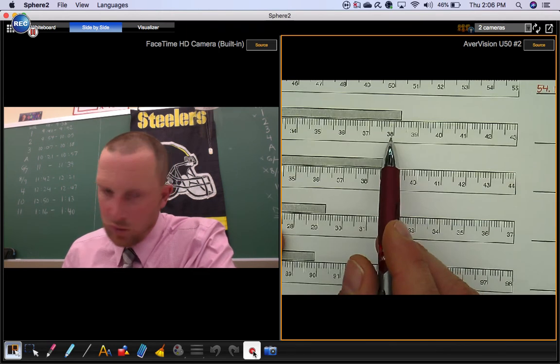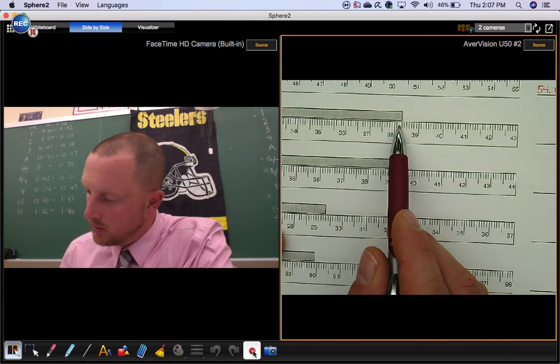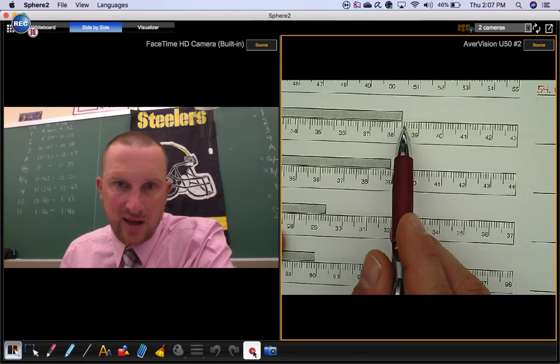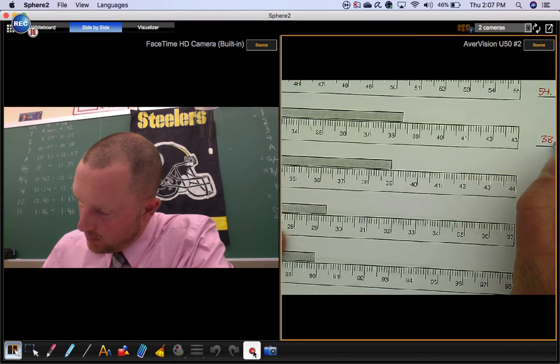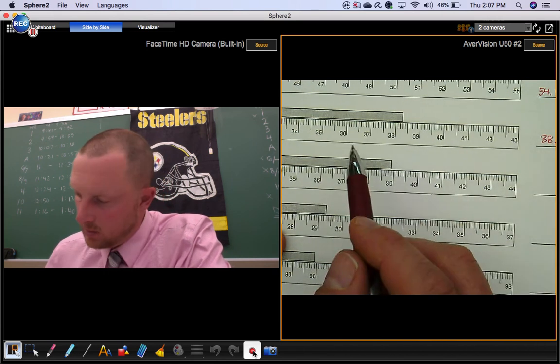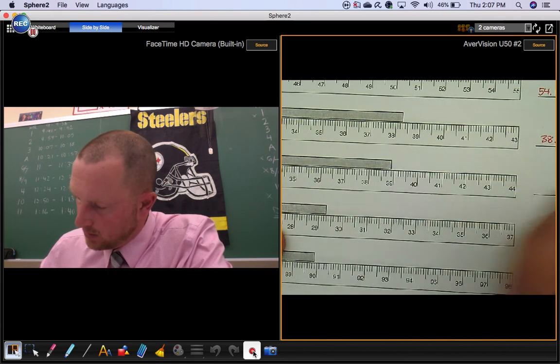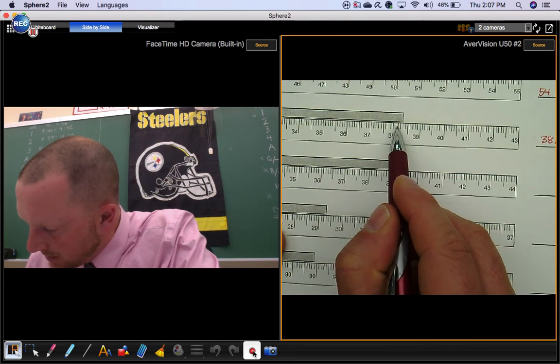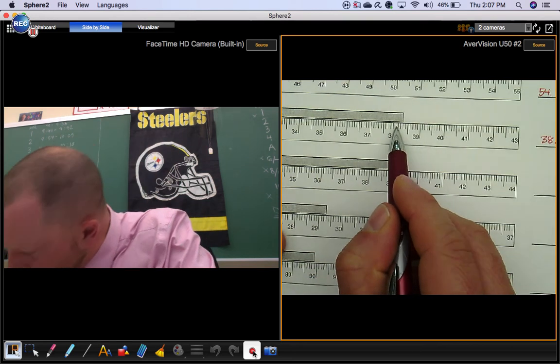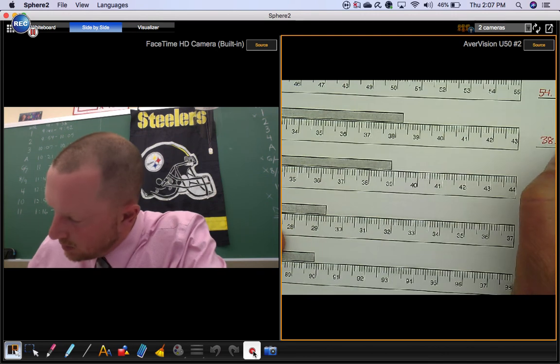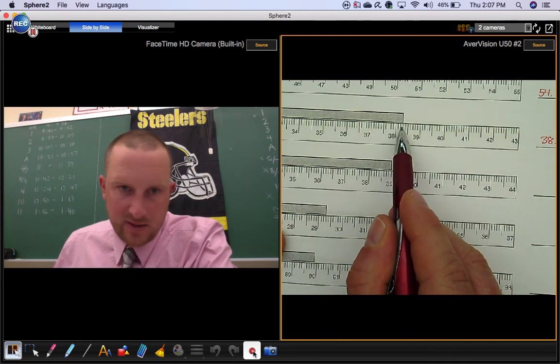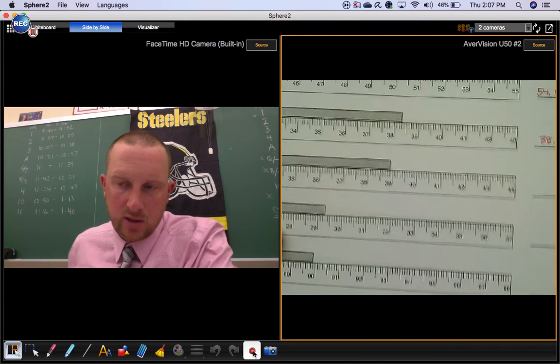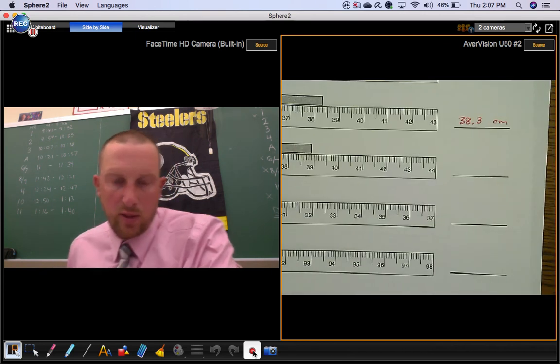Okay so the metric ruler is always easier to use because it's in base 10. So if it's bigger than 38 it's 38 point something and this is going to be in centimeters again. How many little lines passed? Three little jumps or spaces to get to the end of that segment. So we would call it 38.3 centimeters.